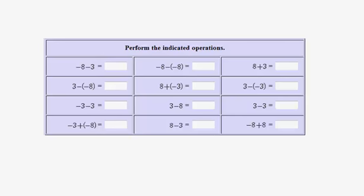First I'm going to categorize the problems as either being an addition problem or a subtraction problem. For example, here is an integer and we're adding it to another integer, so this would be an addition problem. Here are two numbers separated by an addition symbol, so this would also be an addition problem. The remaining ones would be subtraction, and finally one more addition problem.